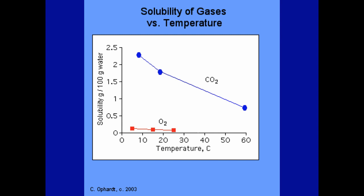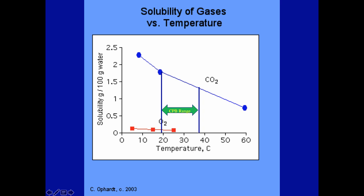Looking at a graph with temperature on the x-axis and solubility on the y-axis, in the physiological range used during bypass — roughly 18 to 37 degrees — the solubility can change significantly across that range.